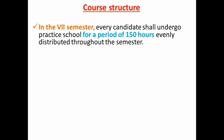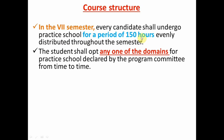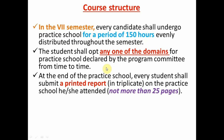The core structure of practice school: in the seventh semester, every student shall undergo the practice school for a period of 150 hours. The student shall choose any one of the domains — there are 8 to 90 domains available. At the end of practice school, every student shall submit a printed report in 3 copies, which should not be more than 25 pages.